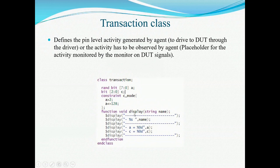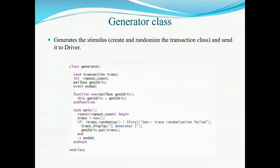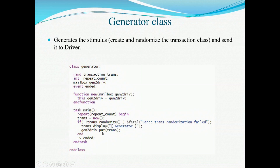Next is a function to display all the inputs and outputs of this program. Next is the generator. The generator is declared as a class and generates the stimulus, sending it to the driver. Its main function creates and randomizes the packet, which is put into the mailbox. A mailbox is used to send the randomized transaction to the driver. It transfers the packet from generator to driver. A repeat count is declared to specify how many times the transaction will be generated. If the transaction fails, the corresponding message will be displayed; otherwise, the transaction is put into the mailbox. An event called 'ended' is used to indicate the end of the transaction.